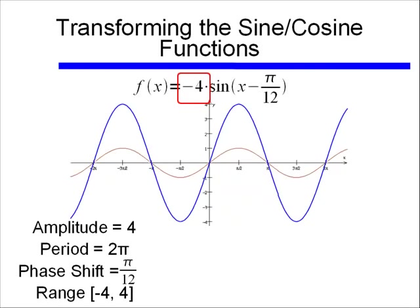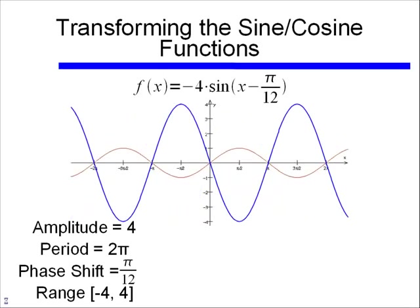Our original function has a negative 4 multiplying our sine function. Remember if we have a negative number, if we have a negative a, then we have to reflect this sine graph over the x-axis. So really graphing negative 4 sine x would look like this. Alright, so we've taken care of our amplitude. We've taken care of the negation sign.